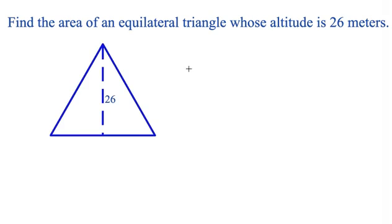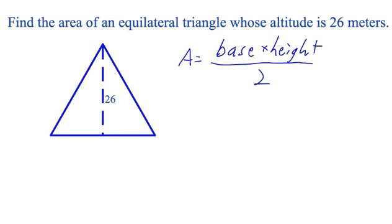To find the area of any triangle, we can multiply the length of the base times the height and divide by 2. Now, all three angles in an equilateral triangle equal 60 degrees, and the altitude of an equilateral triangle always bisects the angle opposite the base. So these two angles here are 30 degrees.